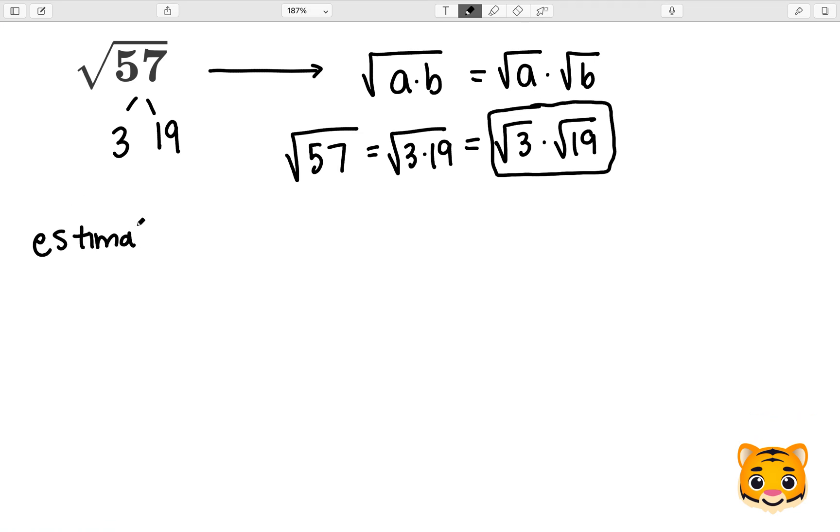However, we can also estimate the square root of 57 by looking at perfect squares that are around 57. The first one is 7 squared which is 49. The second one is 8 squared which is 64. We can see that 57 lies between 49 and 64.